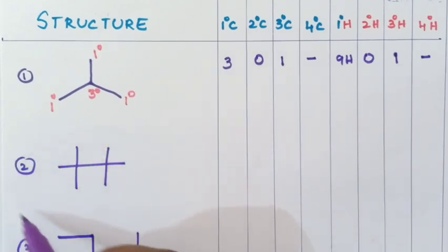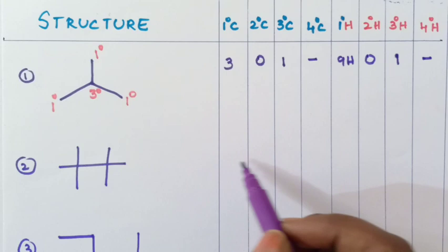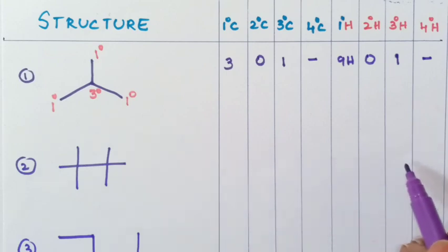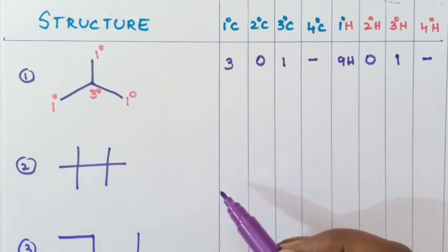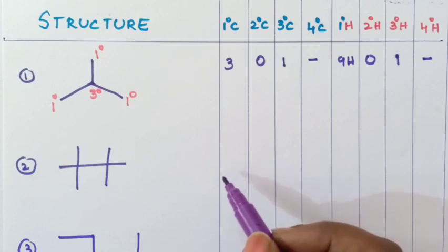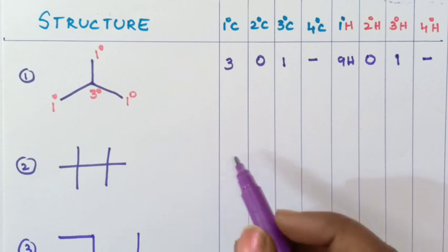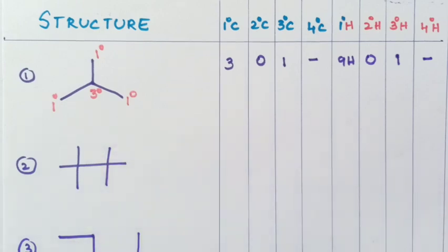Students, here is the second example. I want you to find all of this and write in the comment box. Are you ready, students? Is it simple? If it is easy, you can find this and write in the comment box.